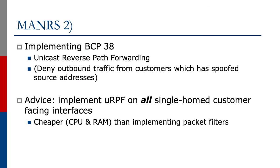The second principle is to implement BCP 38, which is unicast reverse path forwarding. This means denying outbound traffic from customers that has spoofed source addresses. We should only be allowing traffic from IP address space assigned to our customers out from these customer links. Everything else is spoofed or faked and should be dropped.